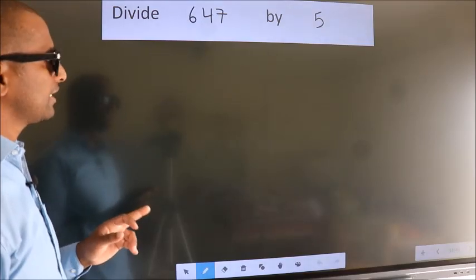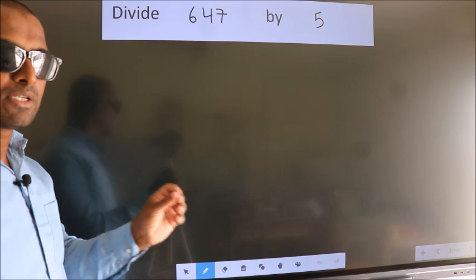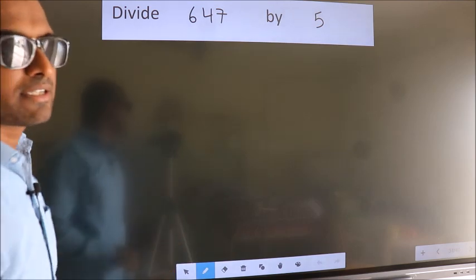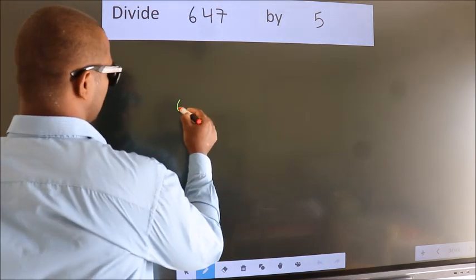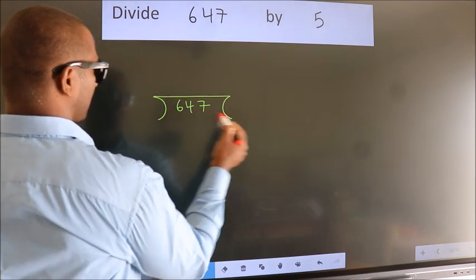Divide 647 by 5. To do this division, we should frame it in this way: 647 here, 5 here.